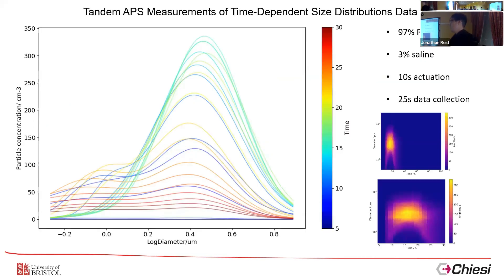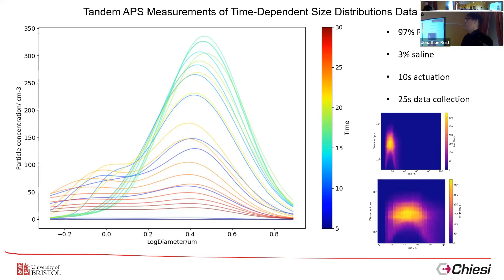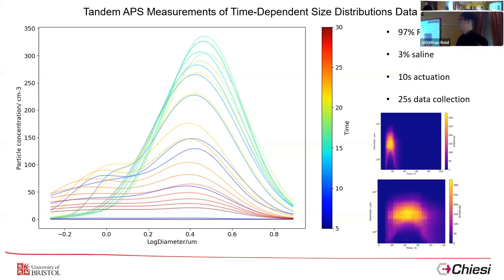Another thing I can do with the APS data is break it down by time, since it takes one sample per second, allowing me to make a size distribution for each second and see how the plume propagates. This shows agreement with the Sympatec results — although the relative humidity parameters differ, with this one being very high and Sympatec at ambient — you can see the larger size distribution appearing first, then slowly shifting toward the smaller end. That's also good news.